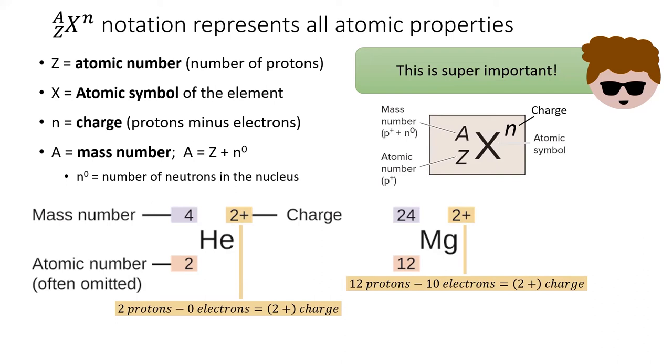Lastly, the mass number is symbolized by the letter A. The mass number represents the mass of the atom in atomic mass units. Because neutrons and protons each weigh 1 AMU, the mass number is equal to the sum of the protons and neutrons.